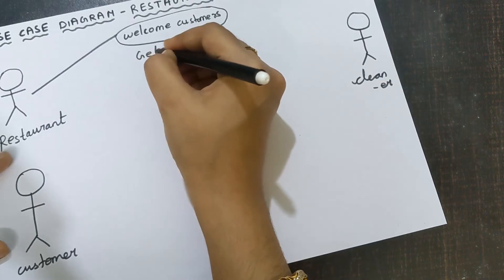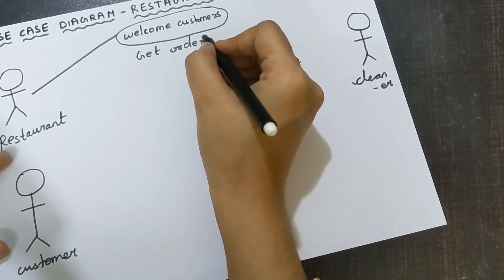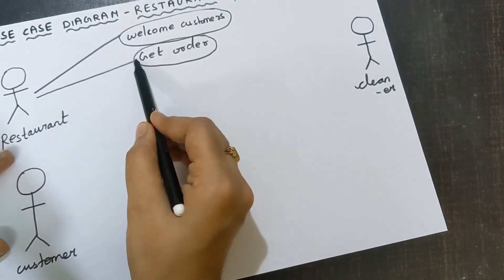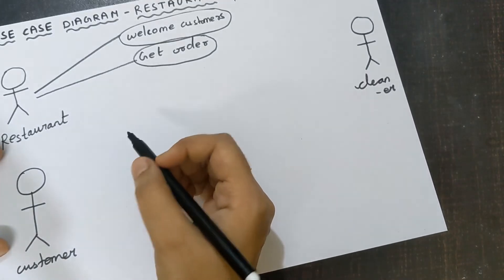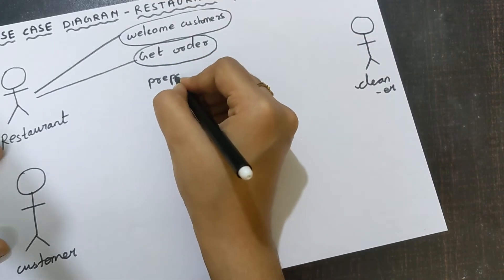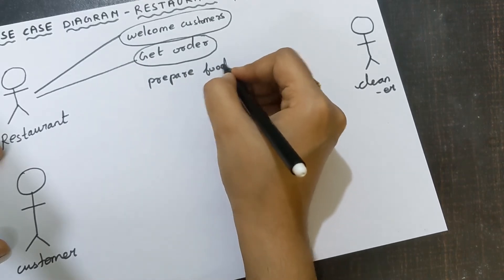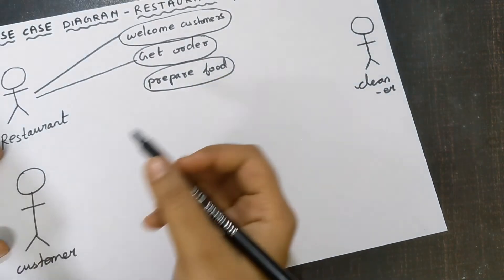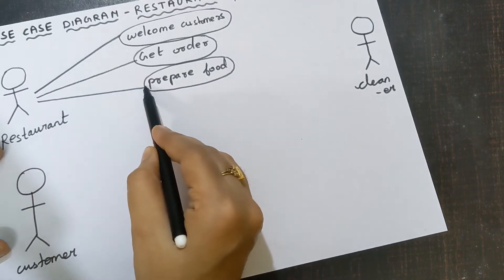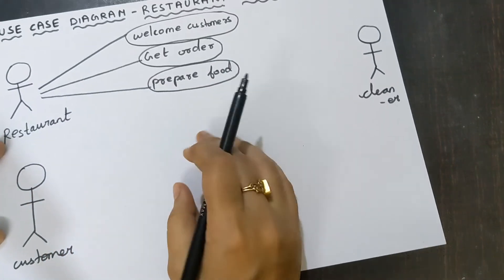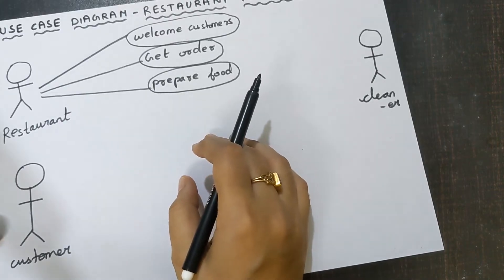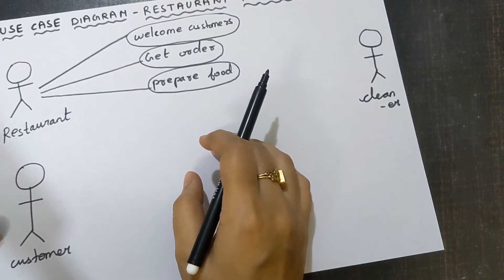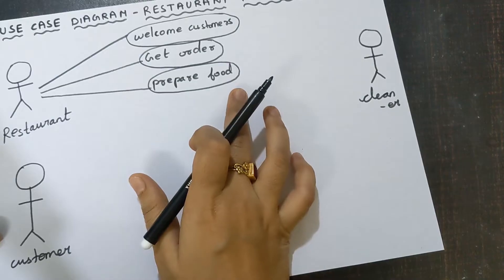Next, get order. In restaurant, they will get order from the customers — so get order is one use case, draw the connector. Next, prepare food. After getting the order, you need to prepare the food which they have ordered. Write this inside the oval shape and join using a connector. For example, if you have ordered mutton biryani, after placing the order they have to go and prepare it.